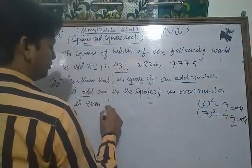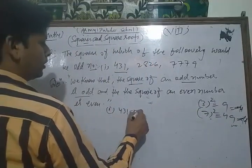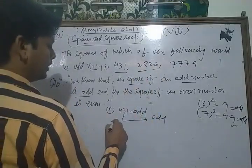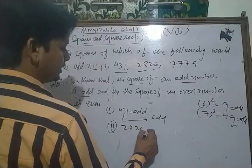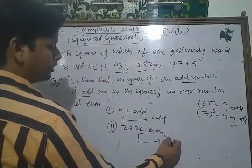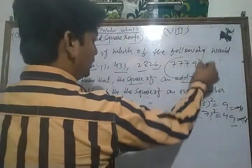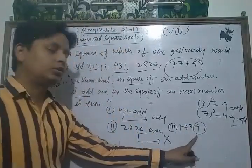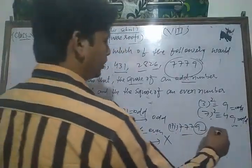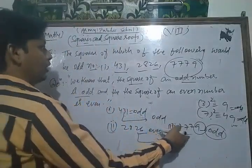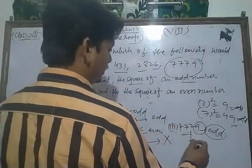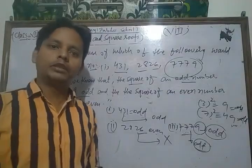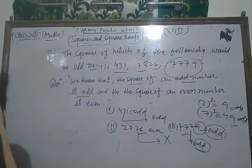So here 431 is an odd number, therefore the square of 431 is always odd. The second number 2826 is even — divisible by 2 — so its square is not odd. The third number 7779 is an odd number because its unit digit is 9, which is odd. Therefore the square of 7779 is always an odd number.